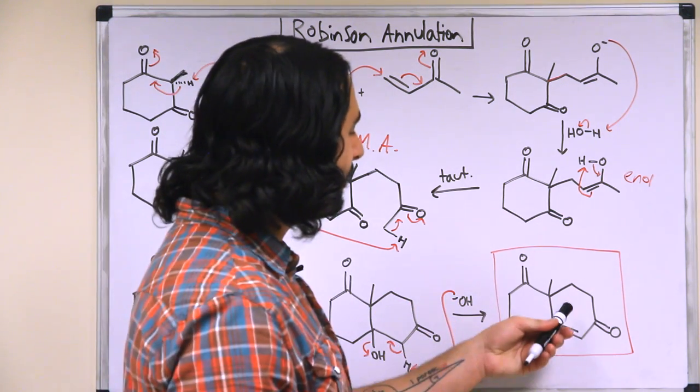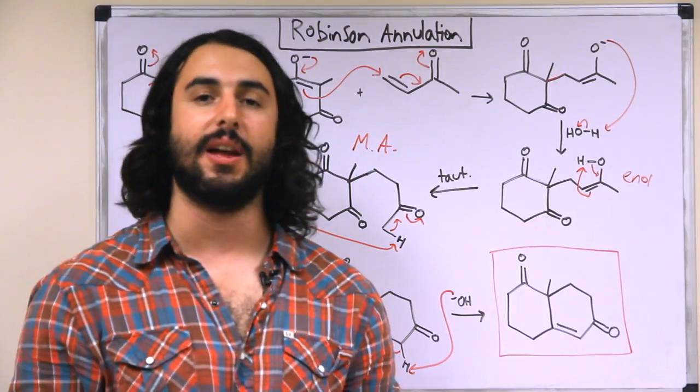And so we have generated a new six-membered ring and that's a very powerful reaction, the Robinson annulation.